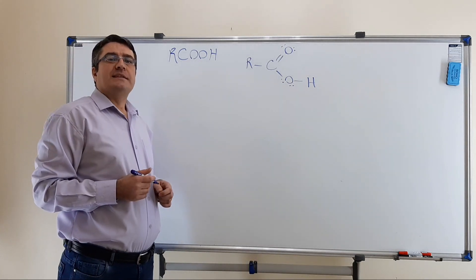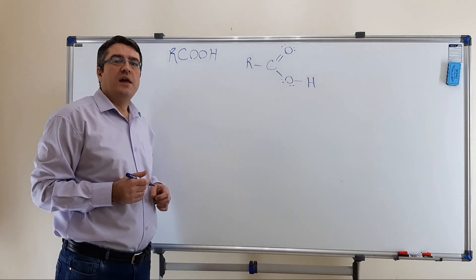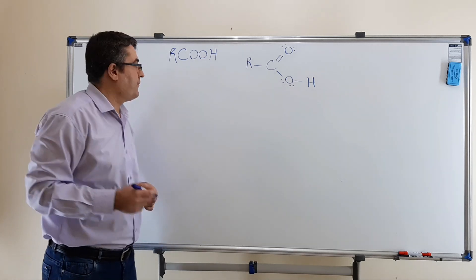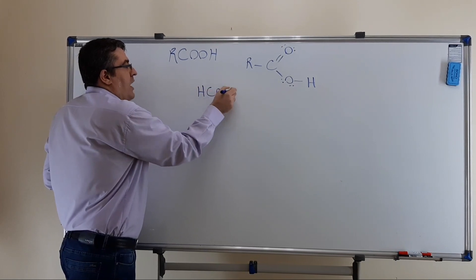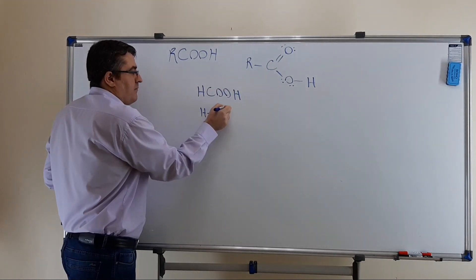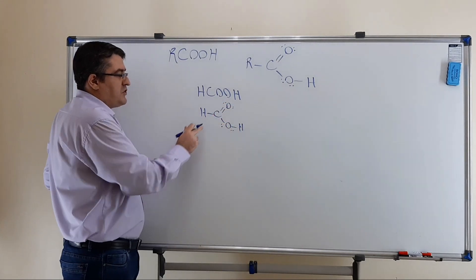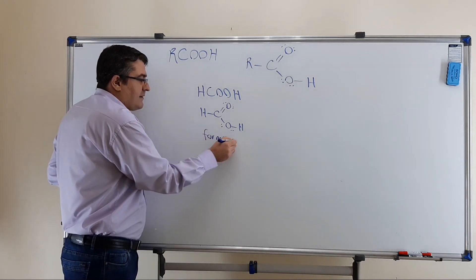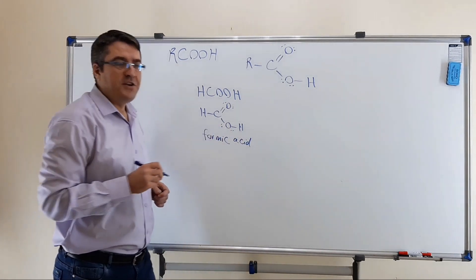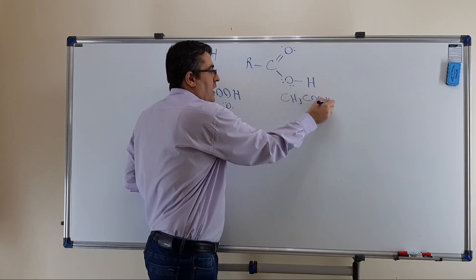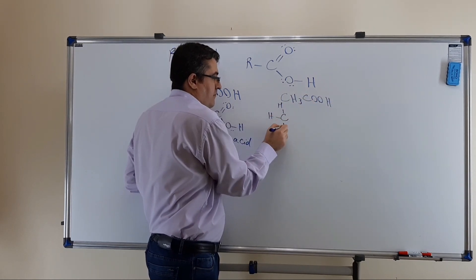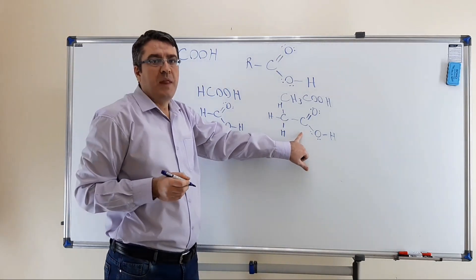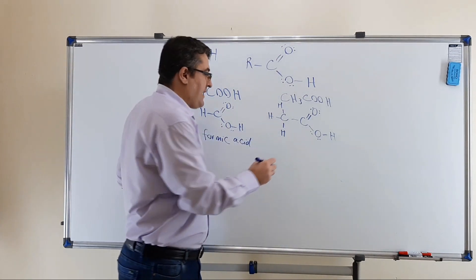In addition, carboxylic acids can have trivial or non-systematic names. For example, methanoic acid with structure HCOOH is commonly referred to as formic acid. As another example, CH3COOH with this structure can be named ethanoic acid, but it is commonly referred to as acetic acid.